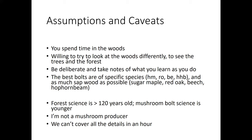The best bolts are of specific species — primarily sugar maple, red oak, beech, and hop hornbeam — and should have as much sapwood as possible. The principles we're talking about are going to be the same regardless of species. Feel free to correct me if I get off on a tangent about mushroom production specifics, since some of you are going to know a lot more than I do about producing the mushrooms themselves.